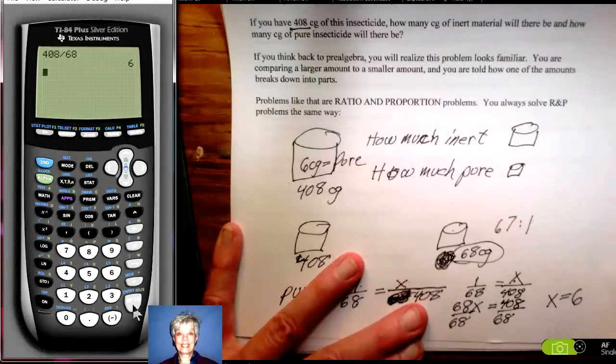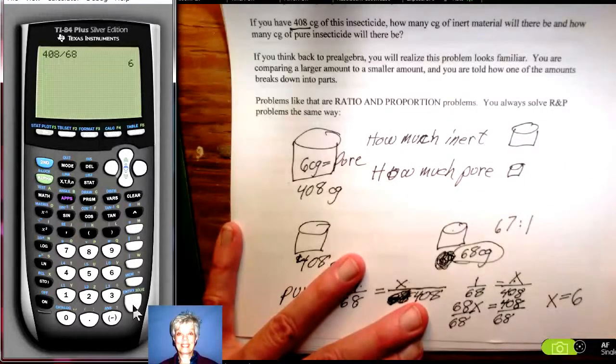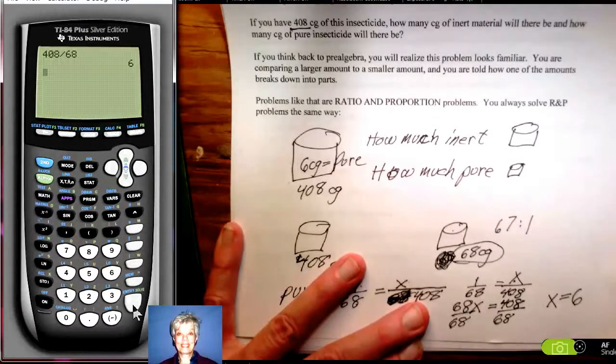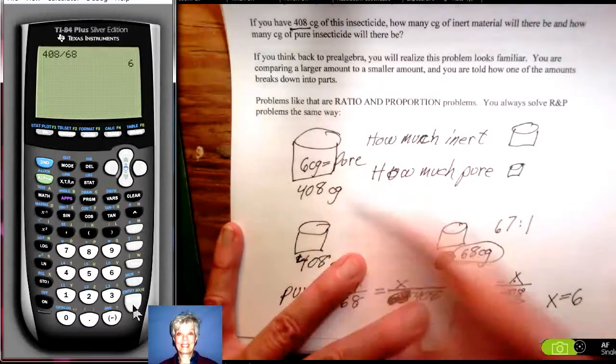I now know that 6 of these centigrams are pure material. How much is inert? Well, that would be 408 minus 6, right? Because if there are 408 centigrams all together and 6 of them are the pure material, then the rest is all going to be inert.